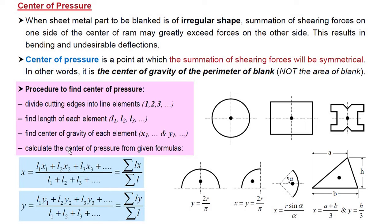Then we calculate the centre of pressure from the given formulae. Centre of pressure in the X direction equals the summation of the product of the length of each element and its centre of gravity in X. So: L1·X1 + L2·X2 + L3·X3 and so on, divided by the total length — that is, the summation of lengths of all elements. This gives us the centre of pressure in the X direction. A similar formula for Y can be utilized to give us the centre of pressure in the Y direction as well.